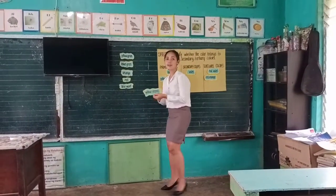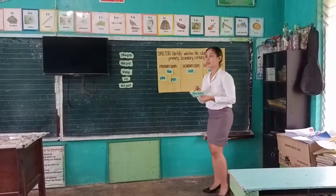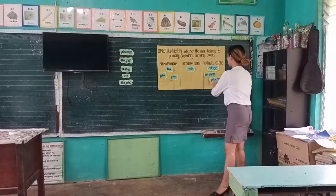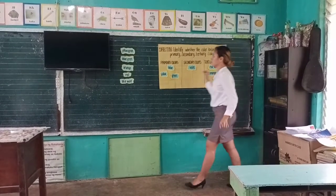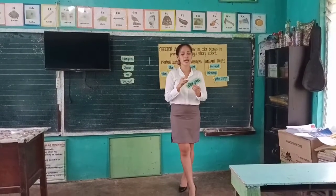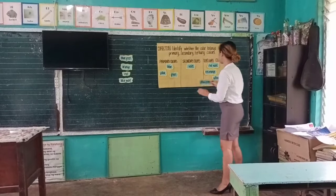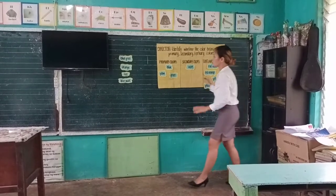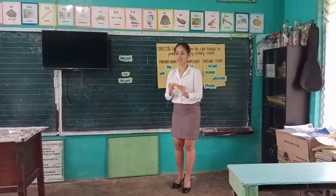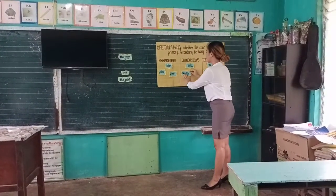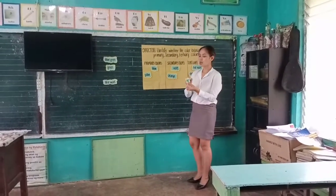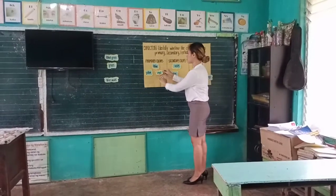Now, how about the yellow-orange? From grade 3, please. Yes, yellow-orange belongs to the tertiary colors. Now, how about the orange? Grade 4. Yes, orange belongs to the secondary colors. Now, let's proceed to color red. Yes, very good. Color red is one of the primary colors.